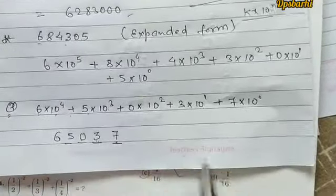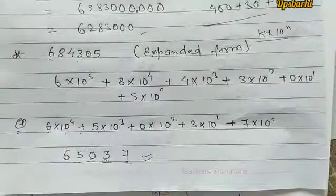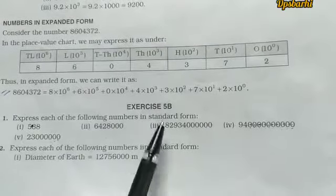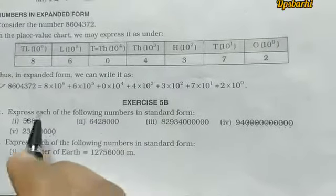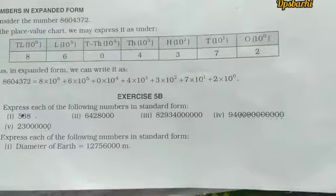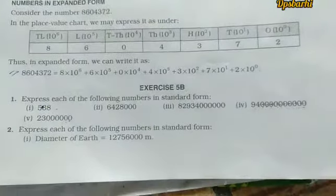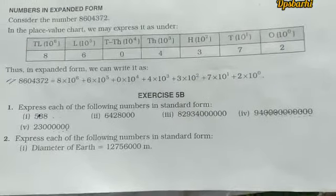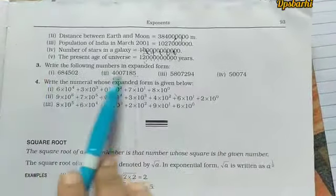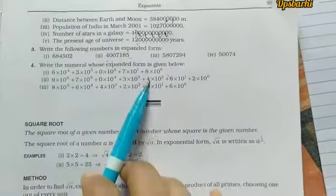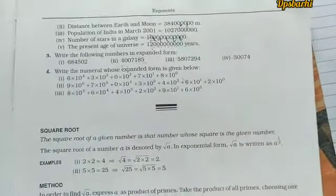So if we write a number like 7000 in expanded form, we write it in this way. Question number 1: 588 — write this in standard form, which gives 5.88 × 10 to the power 2. We also have the diameter of Earth to write in standard form and expanded form. That's all for this chapter. Thank you.